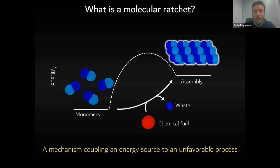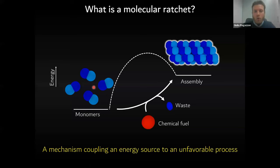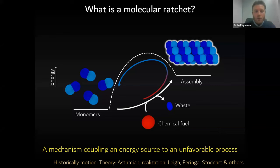So what is a molecular ratchet? I would say it's a mechanism that couples an energy source to a non-favorable process. For example, monomers can assemble and form a high-energy state. If we have some energy that manages to create this high-energy state, this cannot happen via the regular path that was already there — it should be a different path. Therefore, we end up with a reaction cycle, which is something we will find in multiple instances in this talk.